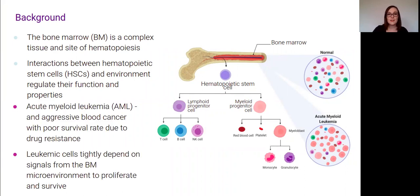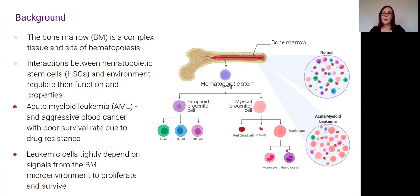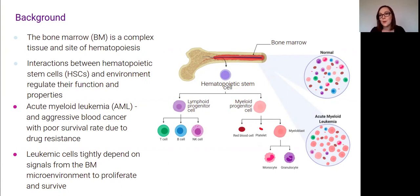AML is an aggressive blood cancer which causes an accumulation of myeloid lineage blood cell precursors in the bone marrow. Unfortunately, the survival rate is quite poor because most patients will eventually develop drug resistance, which is largely driven by the protective microenvironment in the bone marrow where these leukemic cells reside. These leukemic cells depend tightly on signals from other cell types in the bone marrow that encourage them to proliferate and survive, but it's not quite clear what these signals are or what cell types might be involved.